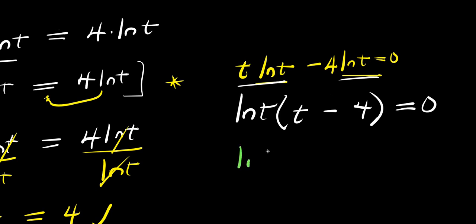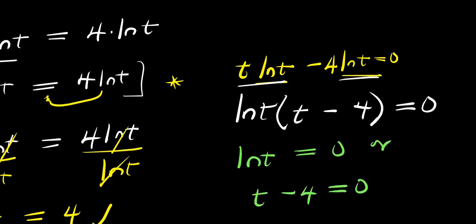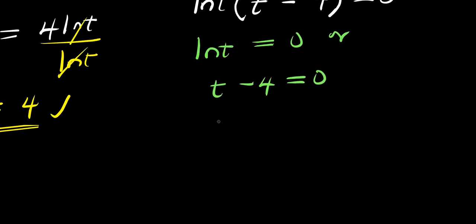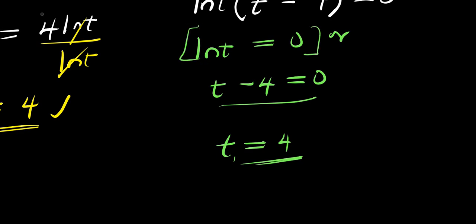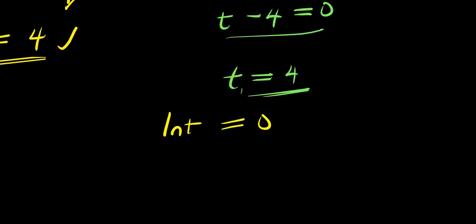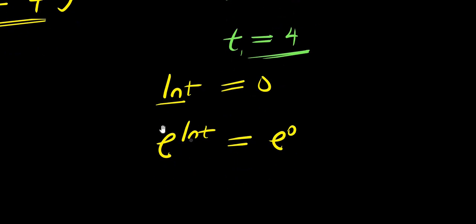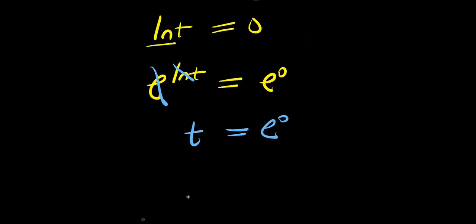So we have ln(t) equals 0 or t minus 4 equals 0. Solving t minus 4 equals 0 gives t equals 4, our first solution. For ln(t) equals 0, I raise e to both sides: e to the power of ln(t) equals e to the power of 0. The e cancels the ln, giving t equals e to the power of 0. Any number raised to the power of 0 is 1, so t equals 1.